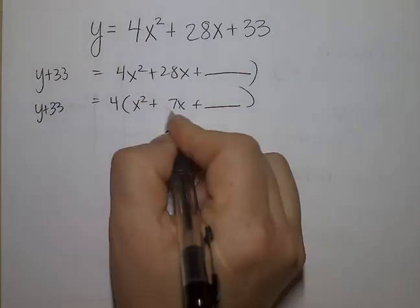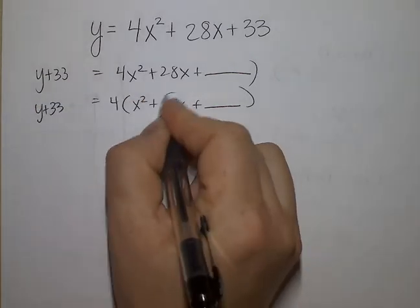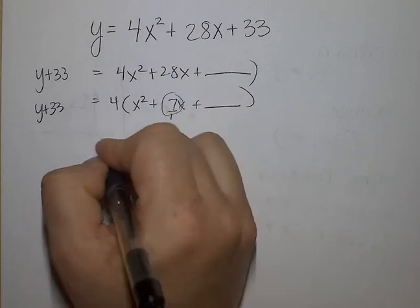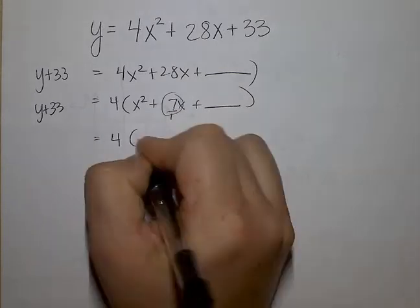Then I'm going to take the b and divide it by 2, so it was 7 over 1. Now it becomes 7 over 2, or 7 halves, positive.